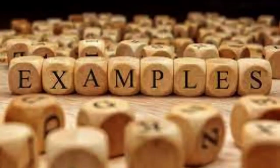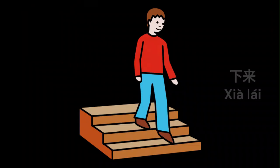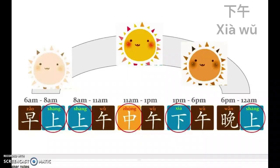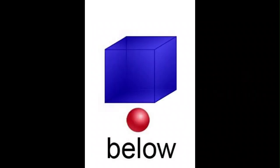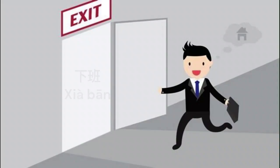Now let's see some examples. 下来 means calm down. 下午 means afternoon. 下降 means descend or decline. 下面 means below. 下班 means to get off work.